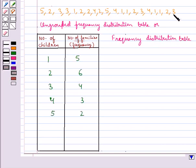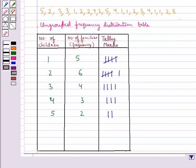From this data, you observe that the number of families with one child is 5, with two children is 6, with three children is 4, with four children is 3, and with five children is 2. We can also use tally marks to represent this data.